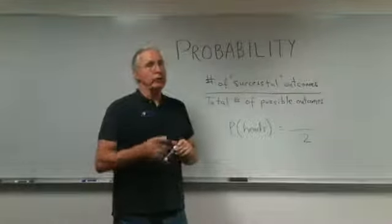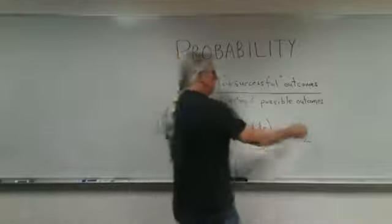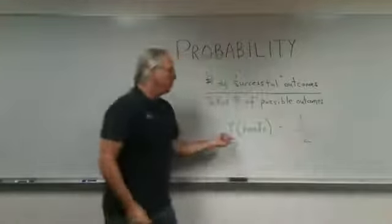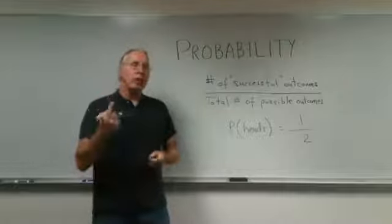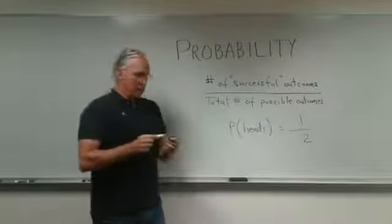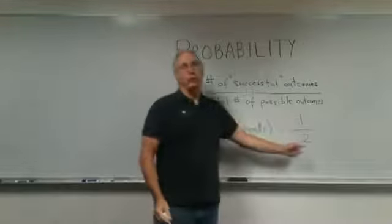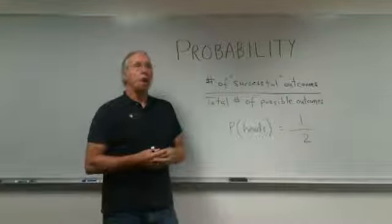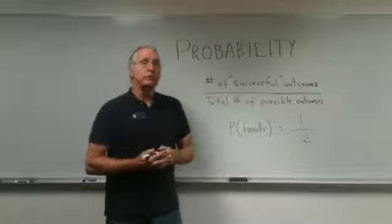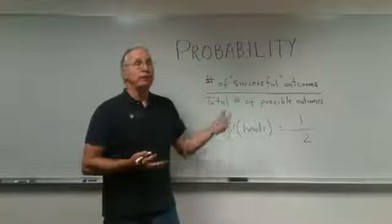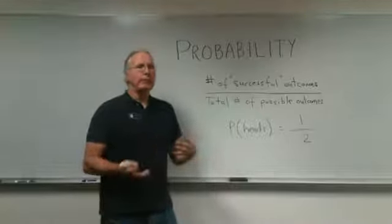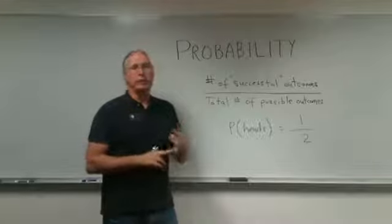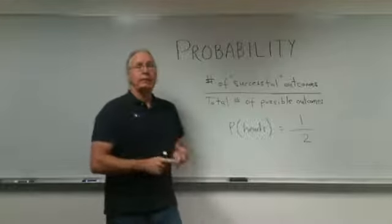And since there's only one head on the coin, the probability of getting heads on one flip of the coin is 1 over 2, 1 half, or 0.5, or 50%. And probabilities are sometimes given as percentages or as decimal numbers.